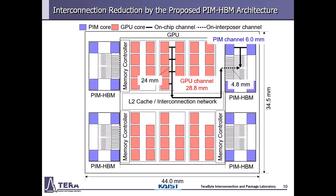This slide shows the overall design of the proposed PIM-HBM and GPU. Blue represents PIM cores and red represents GPU cores. On-chip channels are shown as solid lines and on-interposer channels as dashed lines. A total of four PIM cores can be embedded in the logic die, considering the area of each HBM die. Four PIM-HBMs provide one-quarter the computation of the GPU. The GPU core has a 24mm on-chip channel through the cache and memory controller, plus a 4.8mm interposer channel. The PIM core has only a 6mm on-chip channel. Consequently, the total interconnection length is extremely decreased from 28.2mm to 6mm, greatly reducing data movement energy.